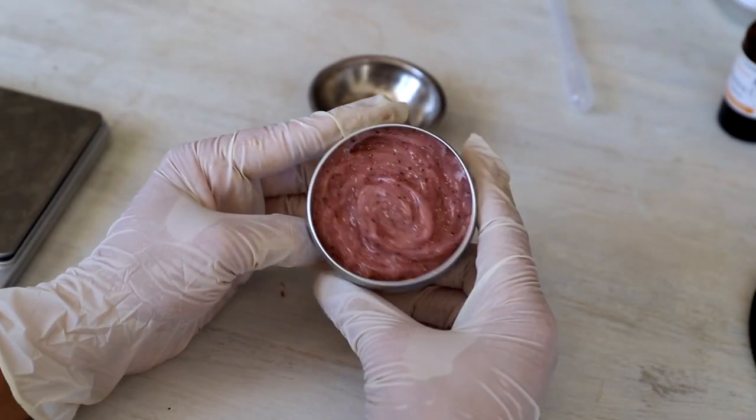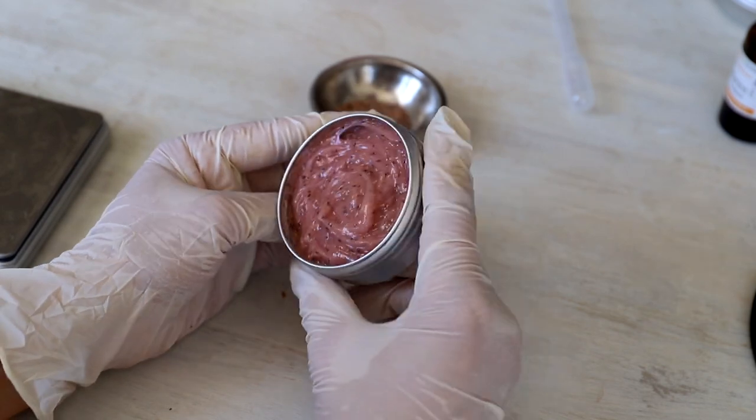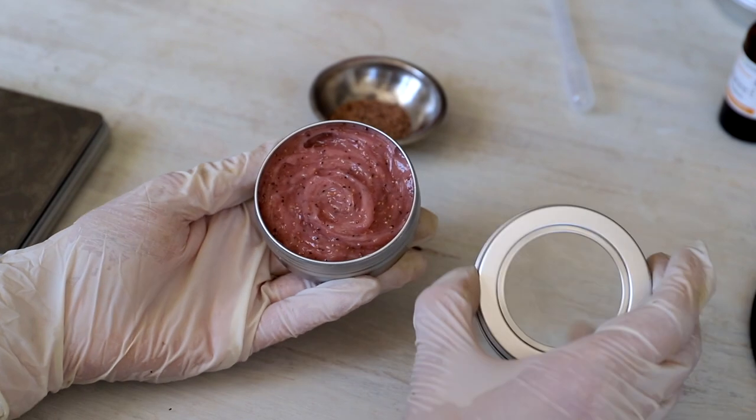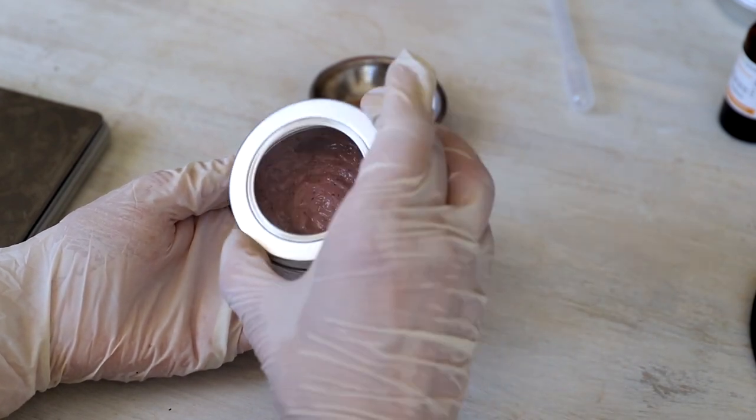That's it, this is our self-emulsifying body scrub. It looks actually like a sorbet. Try to protect it from moisture and try to keep it in a jar with a tight lid.